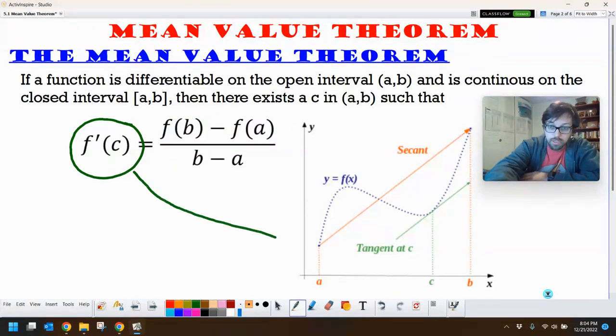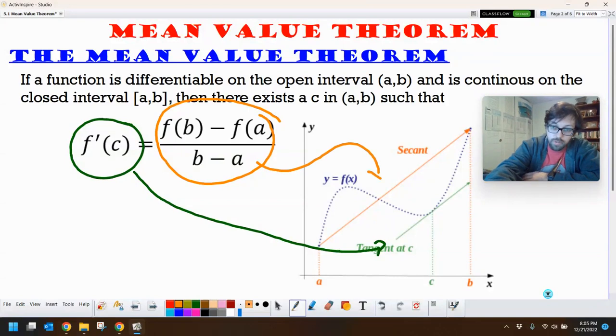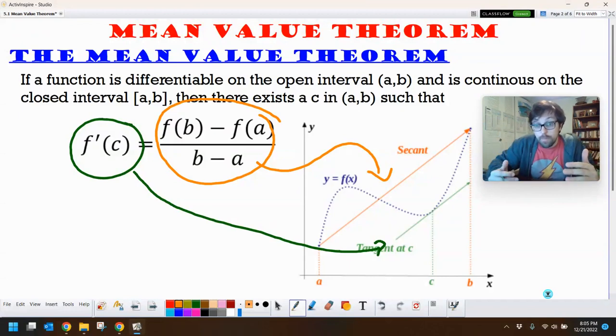So we can see our derivative down here. There's our tangent line. And then the secant line, which is the average rate of change, shows up right here. And those two lines are parallel. Our average rate of change matches up with our instantaneous rate of change.